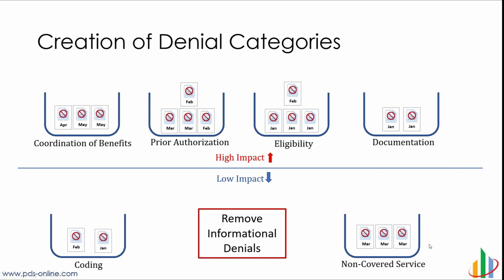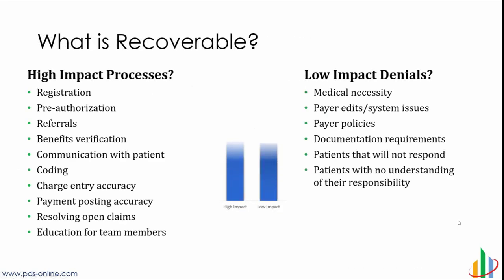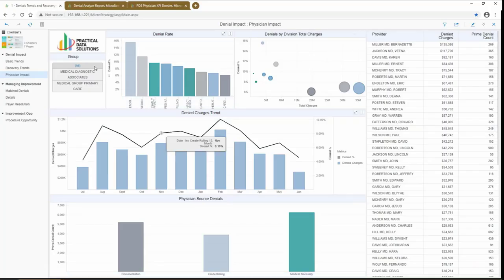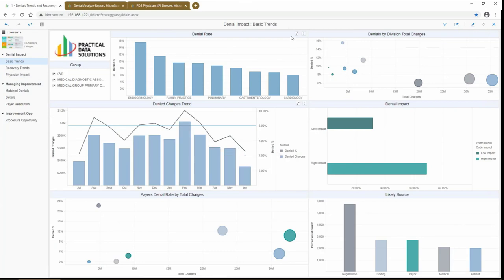The second thing we want to do is determine which denials our organization can have a high impact on, and which ones are more low impact where there may be less we can do. We also want to remove the informational denials that create noise in the data — they're still available in the PDS solution but not needed for analysis. Certain things like non-covered services can become really important because although Medicare might have started covering a particular service, not all payers have followed suit. The ability to categorize data is client-specific and can be tuned to your organization and how your process teams are set up.